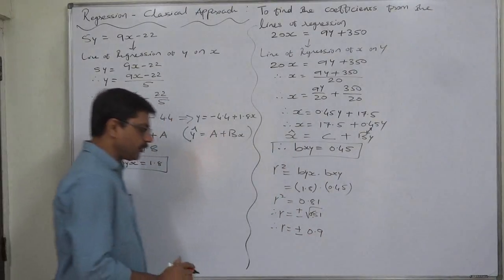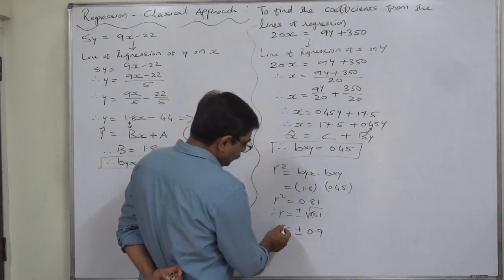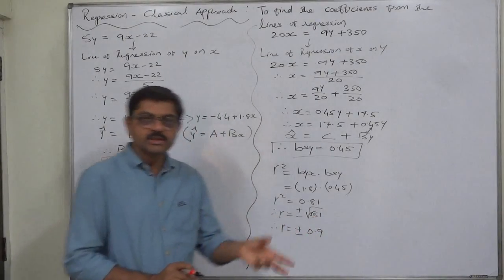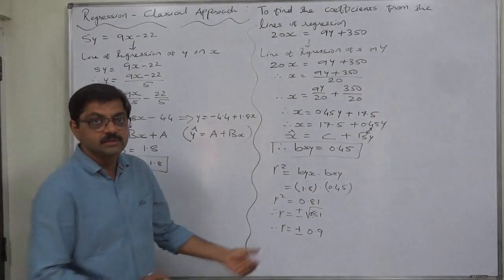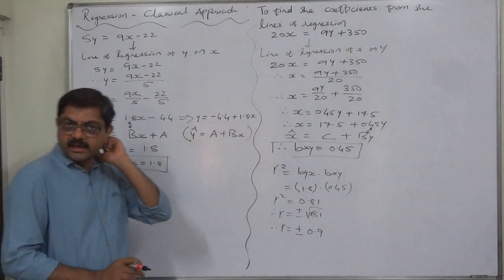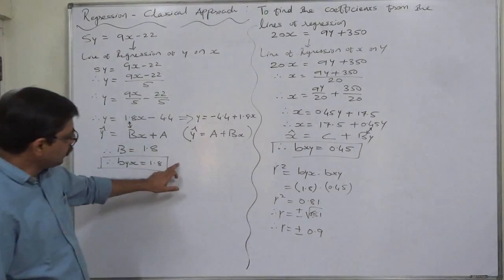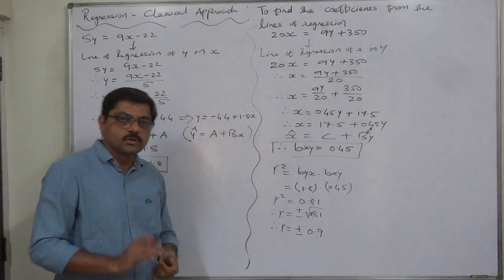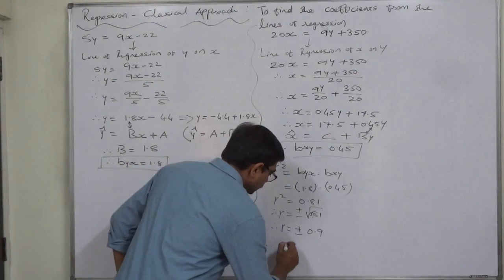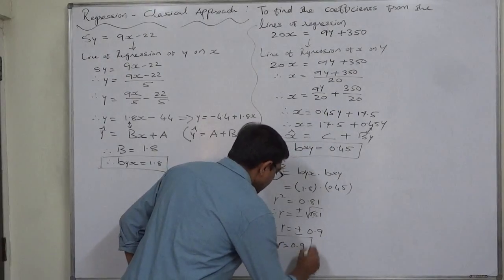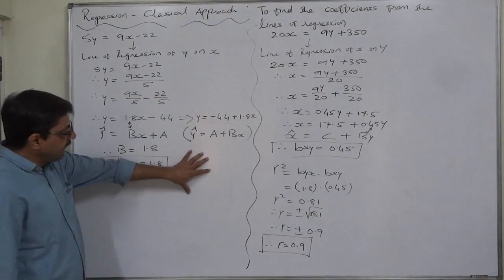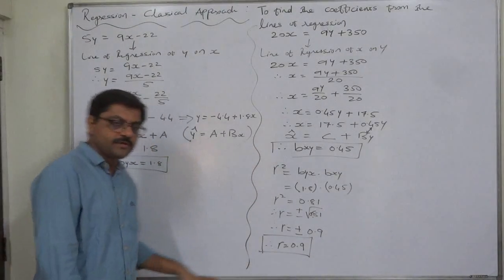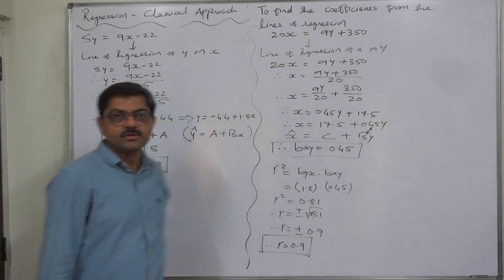The question is: what should be the sign of the coefficient of correlation? The important property is that the sign of the coefficient of correlation and the coefficients of regression is always the same. Since both coefficients of regression are positive, the coefficient of correlation must be positive. So the coefficient of correlation is +0.9. This is the way we find the three coefficients — byx, bxy, and r — from the two equations of lines of regression.